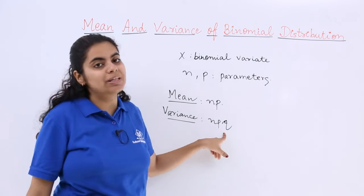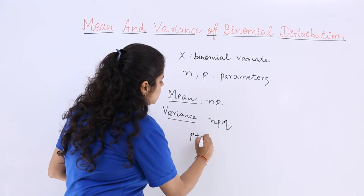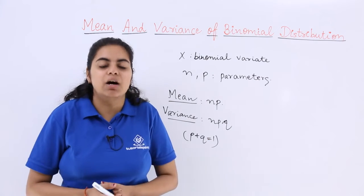What is q? q is the probability of failure, which can be obtained by the relation p plus q equals 1. That means the probability of success and probability of failure add up to 1.